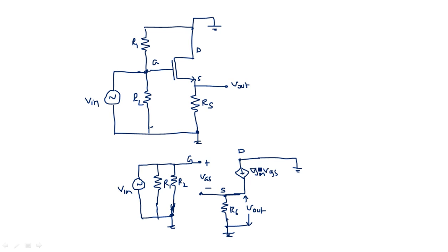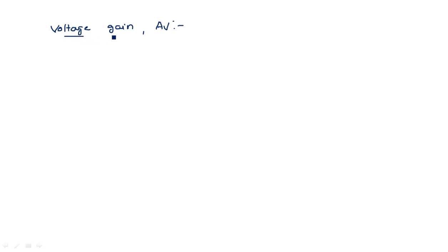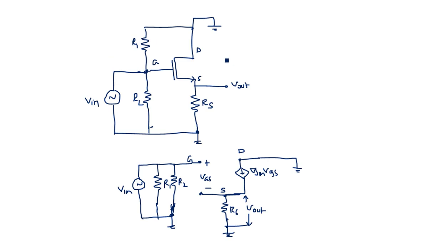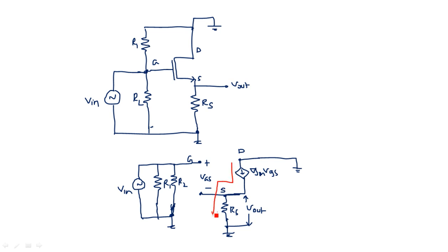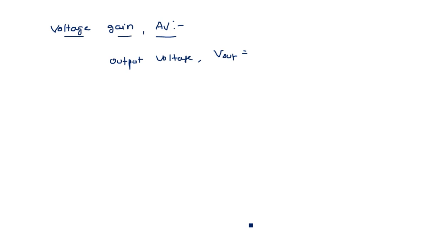Now let us calculate the three parameters: voltage gain, input impedance, and output impedance. Starting with voltage gain Av: we first write the output voltage expression. Vout is calculated across the source resistor RS. The current flowing through the source resistor is Gm·Vgs, and since the current flows from top to bottom, Vout equals Gm·Vgs·Rs.